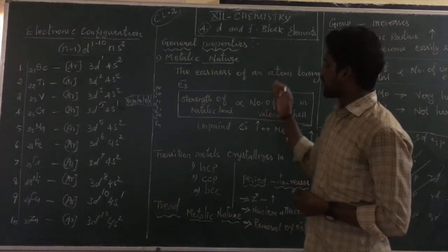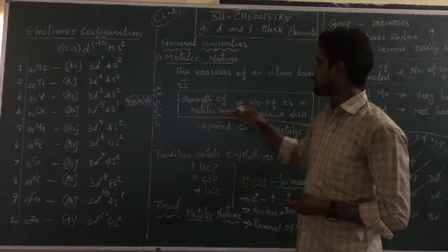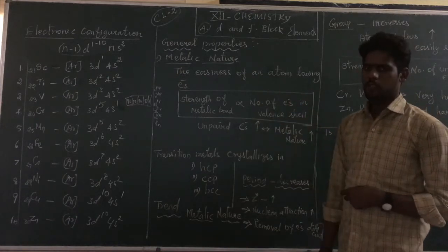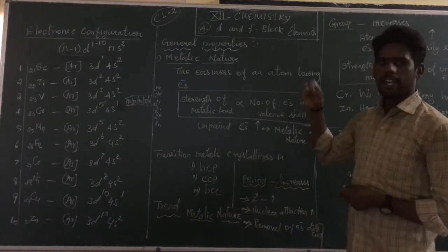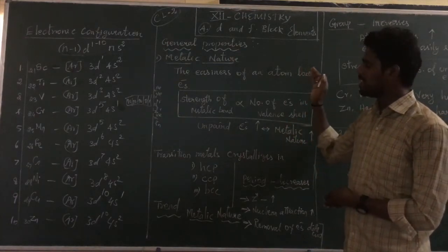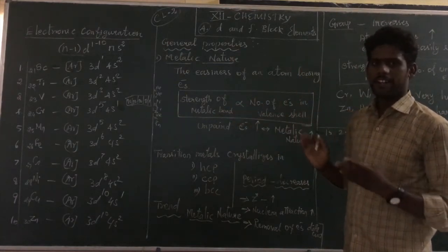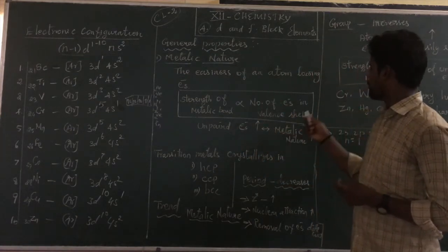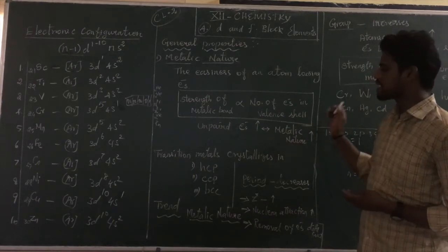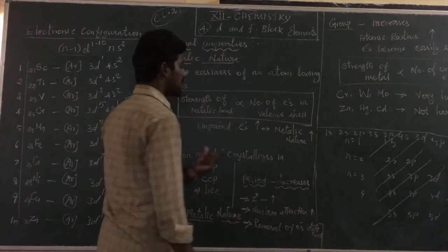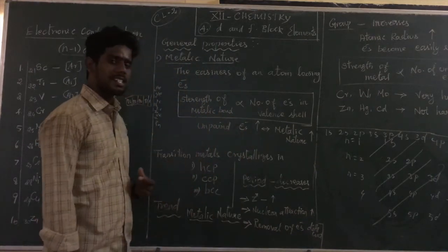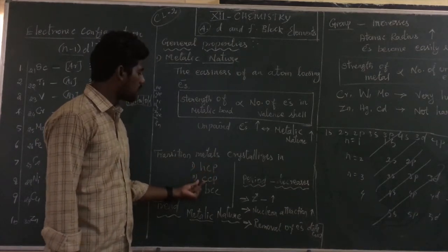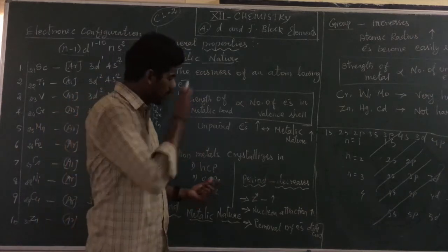The strength of the metallic bond is directly proportional to the number of valence electrons. If the valence electrons are higher, the metallic bond is stronger. Transition metals crystallize in one of three structures: HCP (hexagonal close-packed), CCP (cubic close-packed), and BCC (body-centered cubic) system.